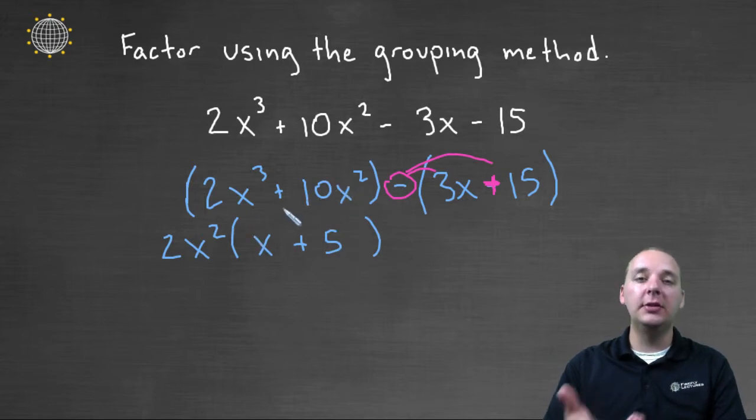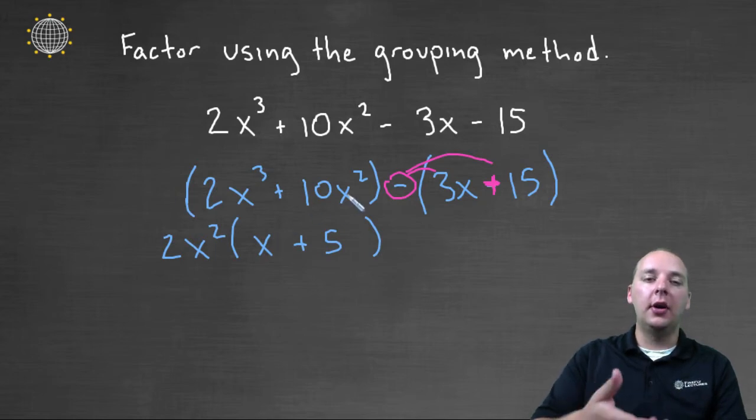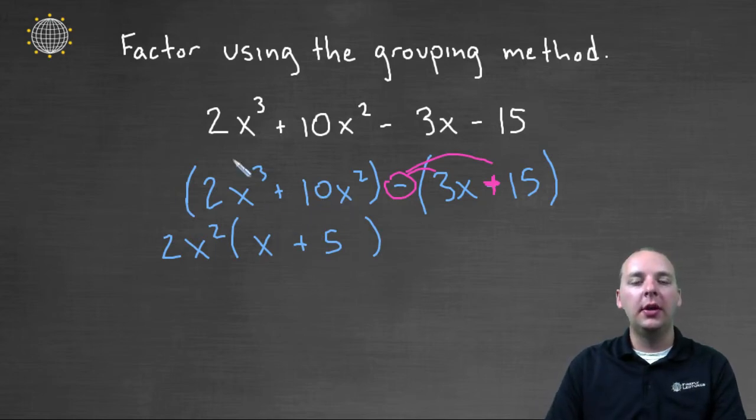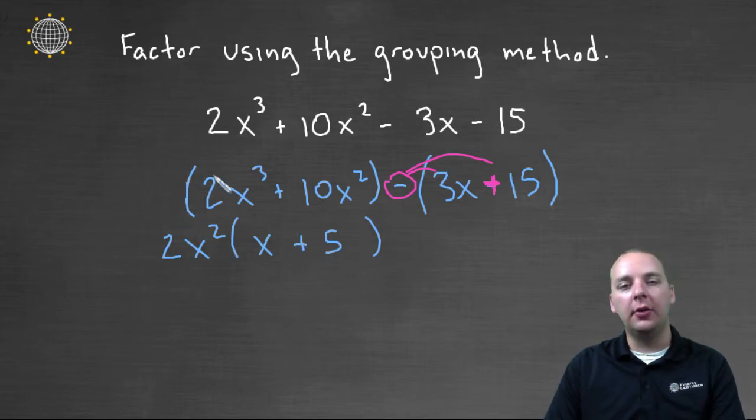This is kind of like using the distributive property in reverse, is taking common terms out of the polynomial and factoring it out, as opposed to distributing it through. Alright, and then we have minus, and then the GCF of 3x and 15 would just be a 3. Pull a 3 out and you'll be left with an x + 5.